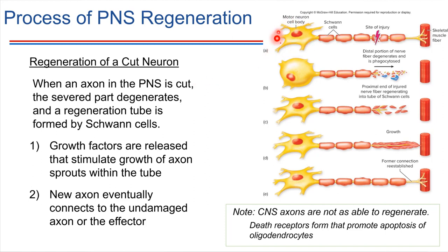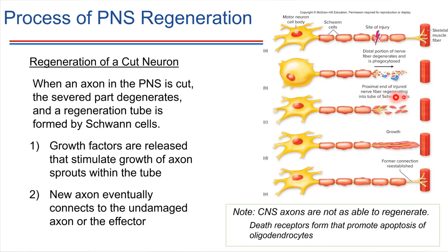Let's look at a peripheral nervous system neuron for just a minute — it's wrapped with Schwann cells providing the myelin sheath. Suppose there's some sort of injury and this neuron gets damaged. First, the site of damage and the rest of the axon will degenerate and get cleaned up by the immune system. However, the Schwann cells do something really neat: they actually stick around and provide an environment that facilitates regrowth of that axon.